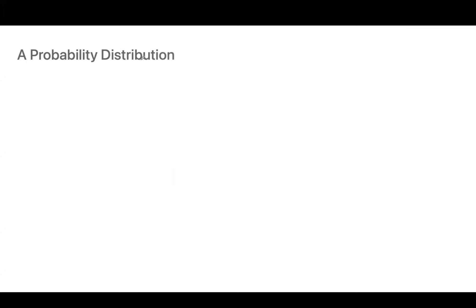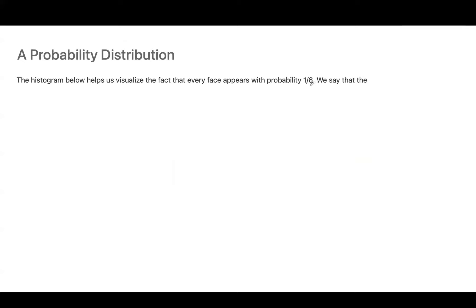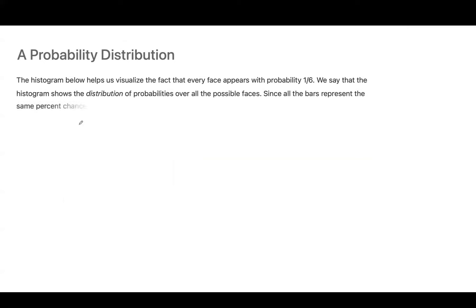Looking at the probability distribution: the histogram helps us visualize that every face appears with probability 1 out of 6. The histogram shows the distribution of probabilities over all possible faces. Since all bars represent the same percent chance, the distribution is called a uniform distribution on the integers 1 through 6.